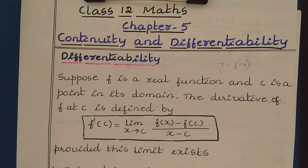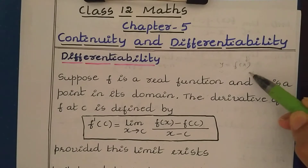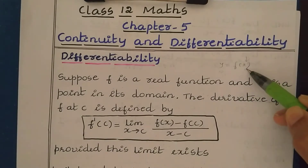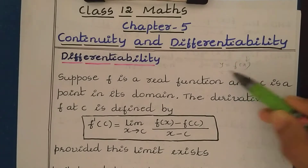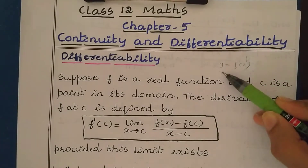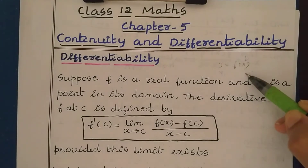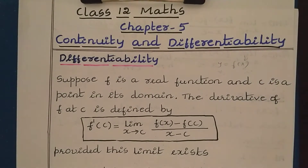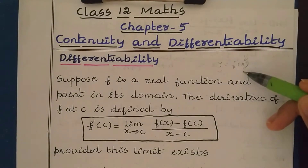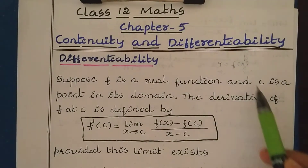First, to understand differentiability, let us take a real function. A real function means the domain and range of the function is a real number. For example, y is equal to f(x). Here, x is the input value and y is the output value. x is the domain and y is the range. If x and y both are in real number form, then we call such a function a real function. Here I am taking a real function f, and one point from the domain of this function, and that point I am naming as c.